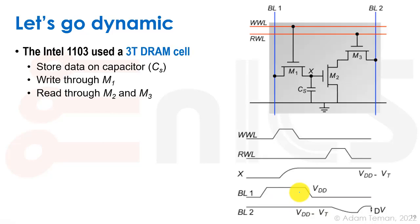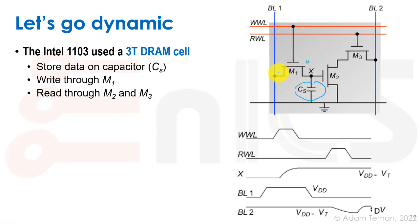The Intel 1103 used a 3T DRAM cell. Intel was initially a DRAM company. You can see the Intel 1103 here — it has M1, which is a write transistor, and M2 and M3, which form a read port. Data is stored on a parasitic capacitor or on a purposely built capacitor called CS.